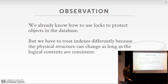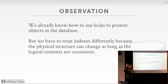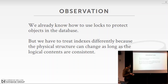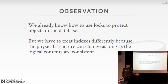At this point in the semester we know about two-phase locking and how to protect objects in our database with shared and exclusive locks. But with an index, we can't just use two-phase locking, because that would mean a transaction holds locks on index nodes or keys for the entire duration of the transaction, severely limiting concurrency.